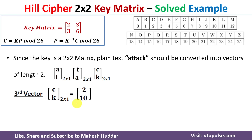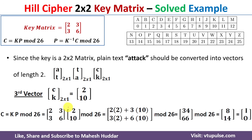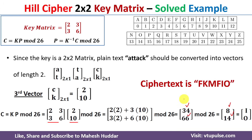For the third vector CK: C is 2 and K is 10. Multiplying the key matrix by this vector gives 34 and 66. Taking mod 26: 34 mod 26 = 8, and 66 mod 26 = 14. Converting back to alphabets: 8 is I and 14 is O. So CK is encrypted to IO.